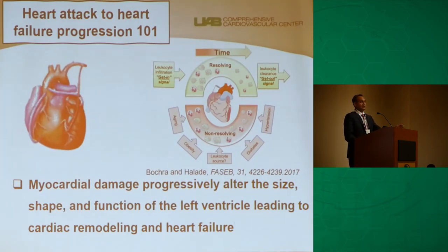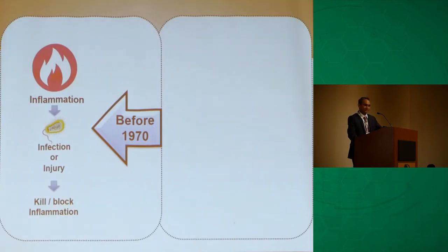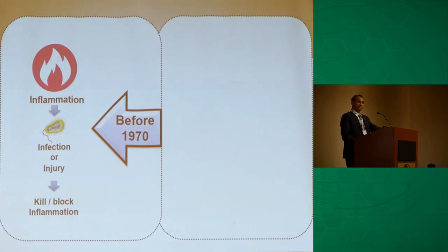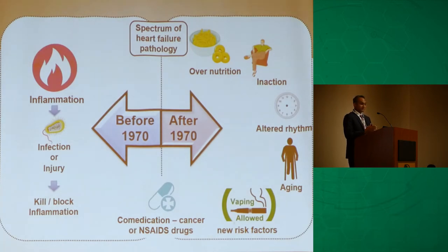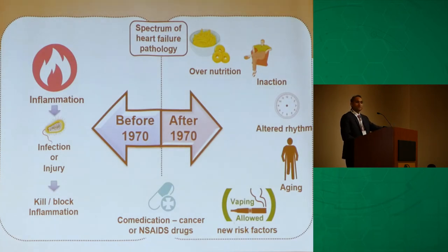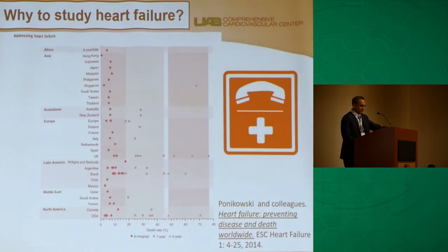Before 1970, inflammation was thought to come mainly from bugs or predator-related injury, which is why we developed antibiotics and agents to block inflammation. More recently, the source of inflammation has shifted — it now comes from nutritional imbalance, physical inaction, altered sleep-wake cycles, and new risk factors such as aging, smoking transitioning to e-cigarettes, and medications like cancer drugs or NSAIDs.